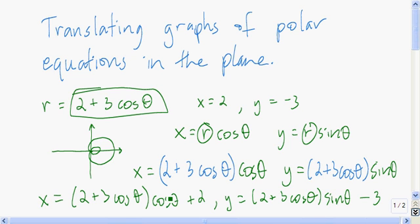If I were to graph these two parametric equations, then I would get this limousine with inner loop shifted around.